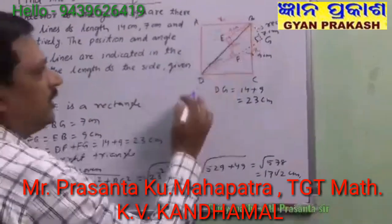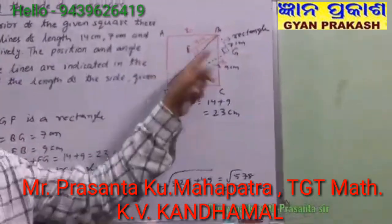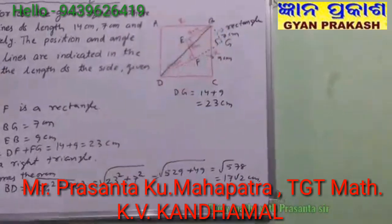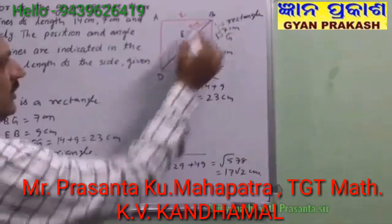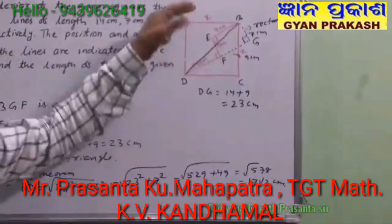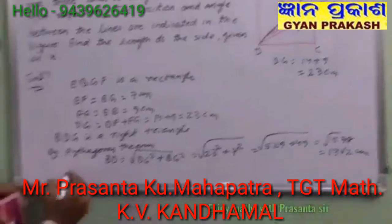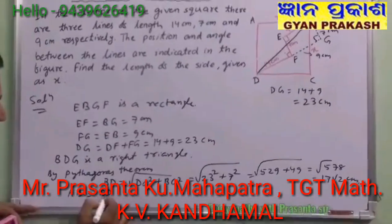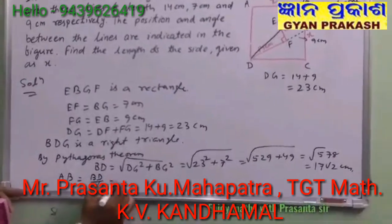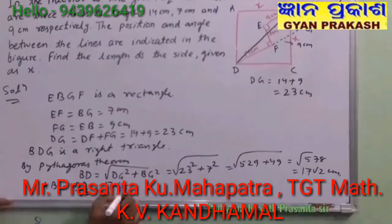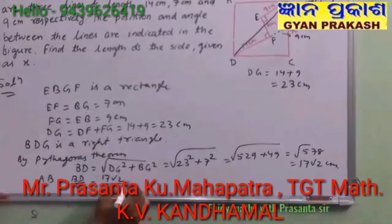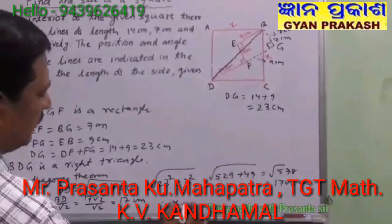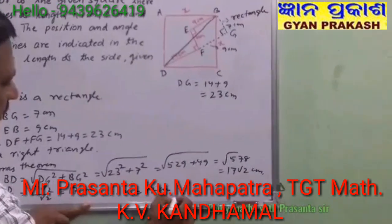We got BD equal to 17√2 cm. And you know, the diagonal of a square equals side times √2. So AB equals BD divided by √2, that is 17√2 divided by √2, which equals 17 cm. That means x equals 17 cm.